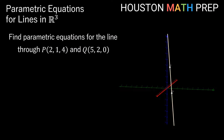Let's start with some basic examples and work up the difficulty. We want to find parametric equations for the line through point P, which is (2, 1, 4), and Q, which is (5, 2, 0). If I pick point P and call its coordinates x0, y0, and z0, I can begin writing my parametric equations.